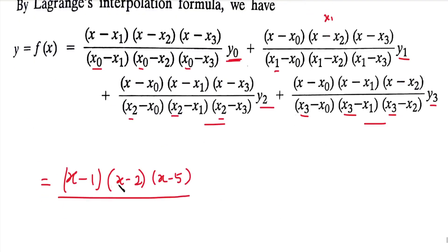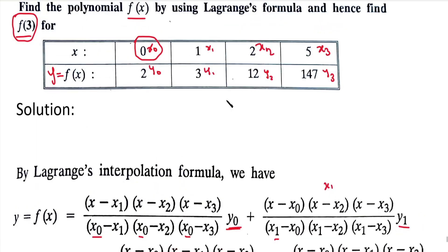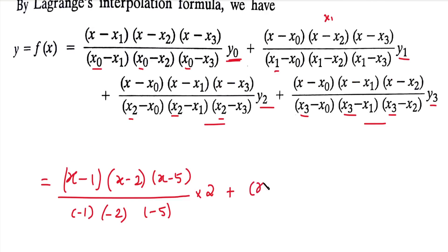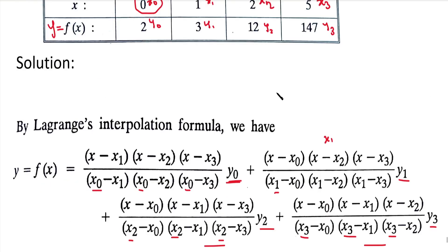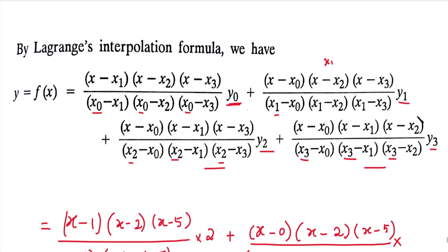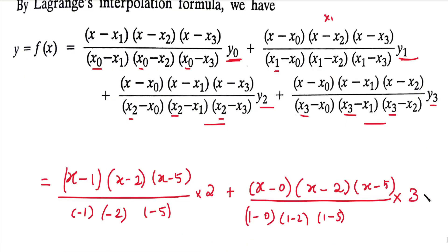x0 value is 0, so the denominator is 0 minus 1, into 0 minus 2, into 0 minus 5, that is minus 1 into minus 2 into minus 5. This is multiplied by y0, which is 2. Then plus the second term: numerator is x minus x0, into x minus x2, into x minus x3, which is x minus 0, into x minus 2, into x minus 5.